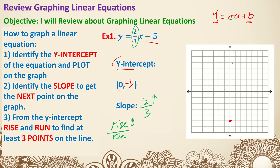Two over three means we go up by two and right by three. From the y-intercept, up two, over three — that's our second point. Up two, over three again — another point. Since we're going up and right, we can also go backwards: down by two and left by three to get a point on the other side. Now connect all of these into a straight line — that's how we graph linear equations.